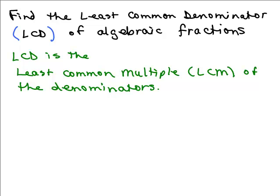In this video I'll be covering how to find the least common denominator of algebraic fractions. LCD is an abbreviation for least common denominator, and the least common denominator is simply the least common multiple — which we abbreviate as LCM — of the denominators. I've covered this in other videos for numbers alone; the difference is now we're going to be doing it when there are variables involved as well.